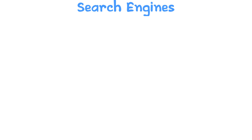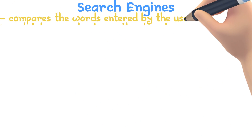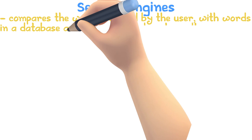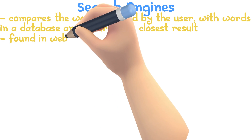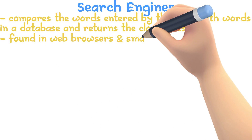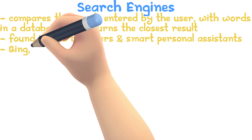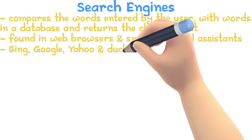Search engines compare the words entered by the user against words in a database and then display the closest results. Search engines are found in web browsers and smart personal assistants like Alexa and Siri. Some examples would be Bing, Google, Yahoo, and DuckDuckGo.